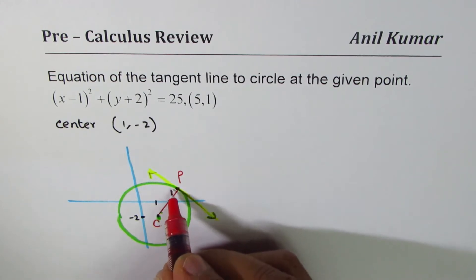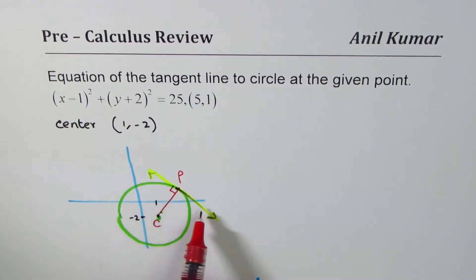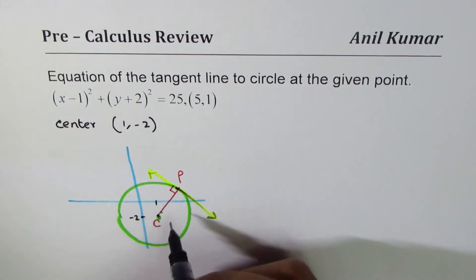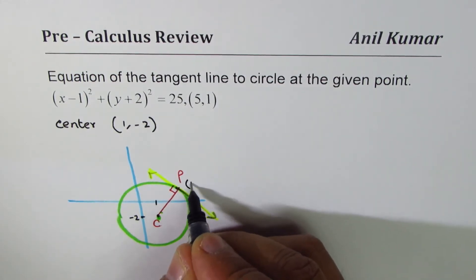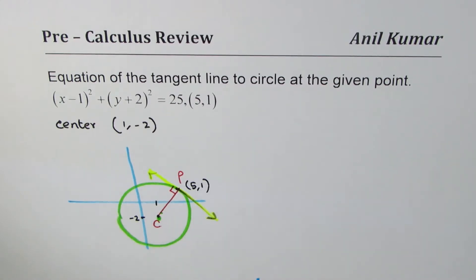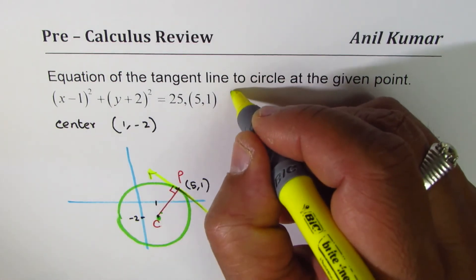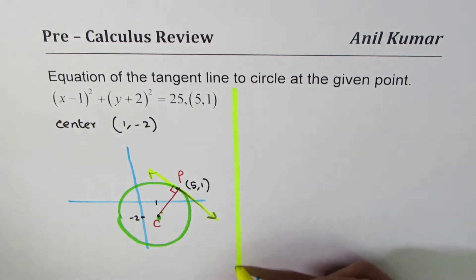And once you do that, we can find the slope of this line CP. Slope of tangent will be negative reciprocal. We already know a point on the circle, which is also on the tangent, which is (5, 1). And then, I think it should be simple to find the equation of the tangent line. So I hope with this, you understand the whole concept. So once that is clear, let's begin.